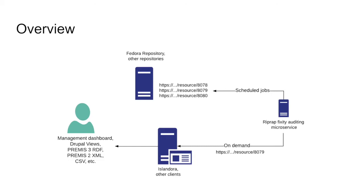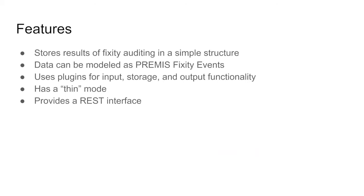For example, in the Islandora context — and I'll demonstrate this briefly at the end — Islandora can provide a user interface for an administrative user to peer into RIPRAP's record of fixity check events for a given resource or at a repository level to see if there are any failures. Some of RIPRAP's more useful features: it stores results of fixity checks in a simple structure. There's enough information in this data structure to model your fixity events as PREMIS fixity check events if you want to do that.